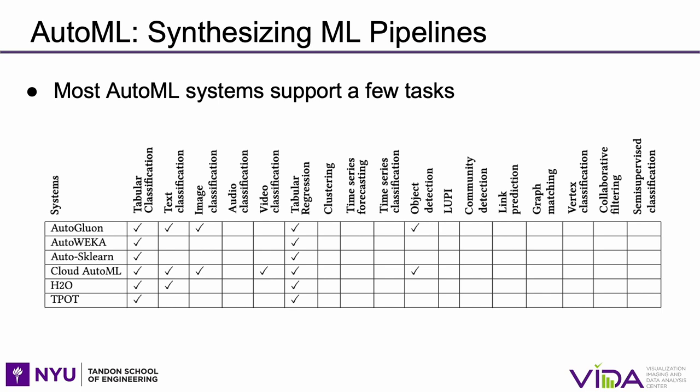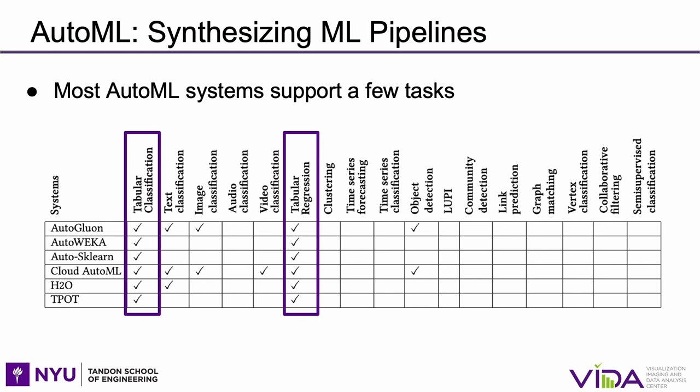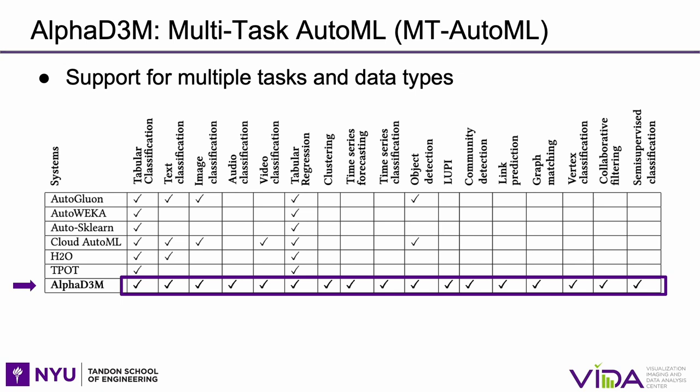Automated machine learning has emerged as an alternative to automatically synthesize machine learning pipelines, thereby democratizing machine learning techniques to non-experts as well as increasing the productivity of data scientists. Most end-to-end systems are designed to work with tabular data and only support classification and regression problems. In this paper we present AlphaD3M, an open source AutoML library that supports a wide range of data and problem types — in total, 17 machine learning tasks and 6 different data types.